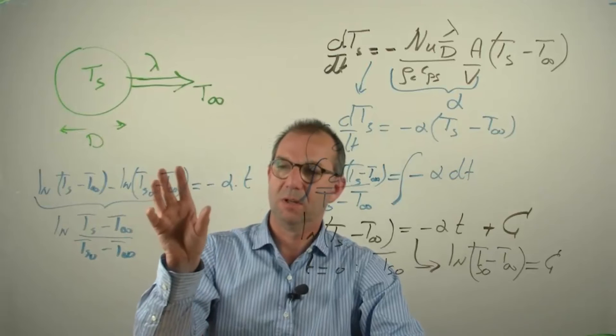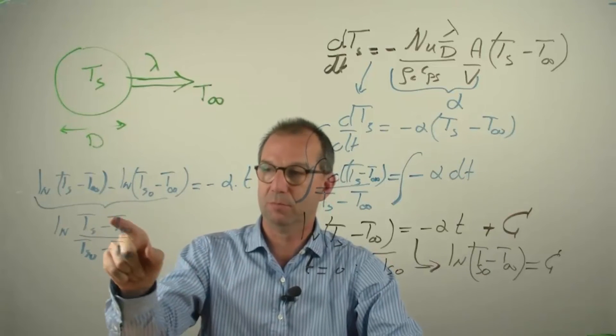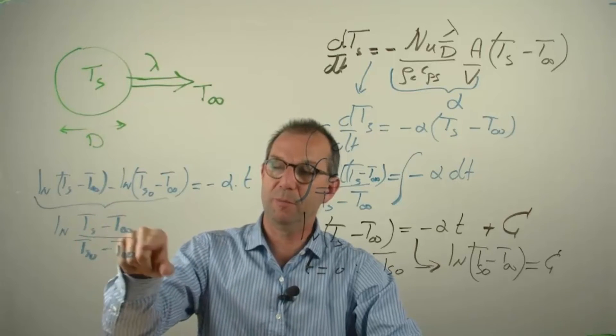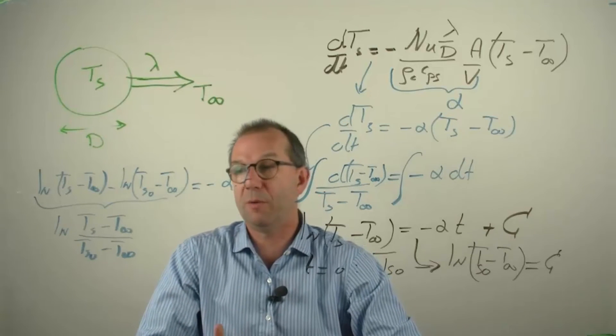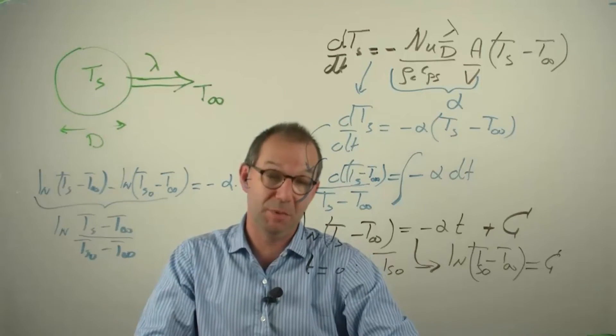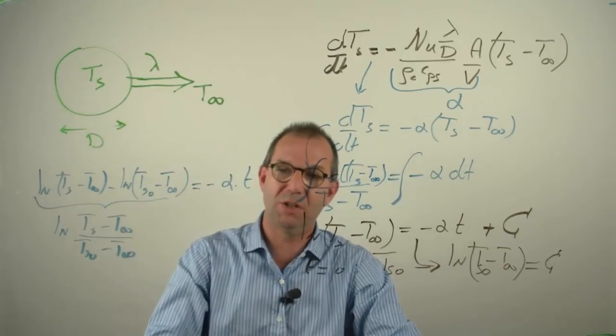That is nice, because now it's a dimensionless ratio, temperature over temperature. And that is needed because the logarithm can only be taken from dimensionless quantities. I don't know how to do the logarithm of a meter. Is that the same as the logarithm of 100 centimeters? I would guess so, but I don't know what it means. So it's better to cast it in this way.